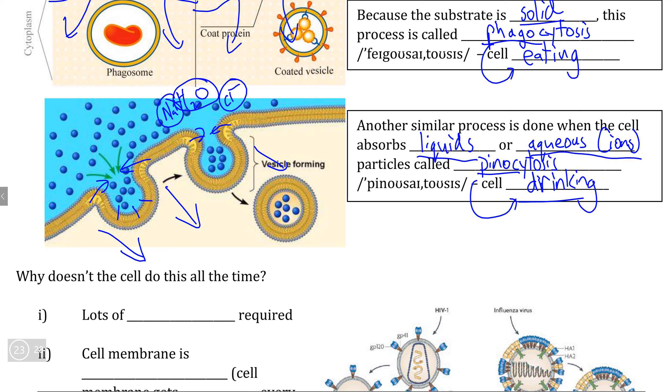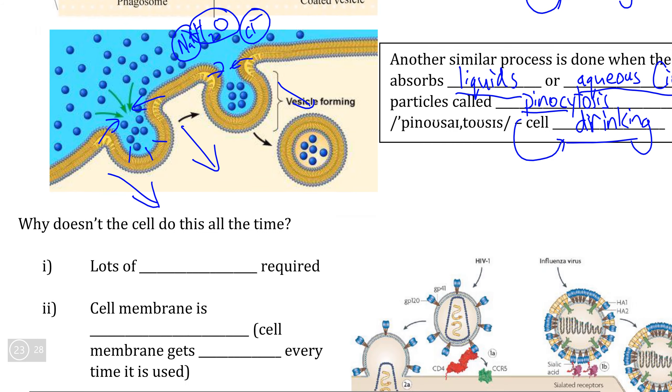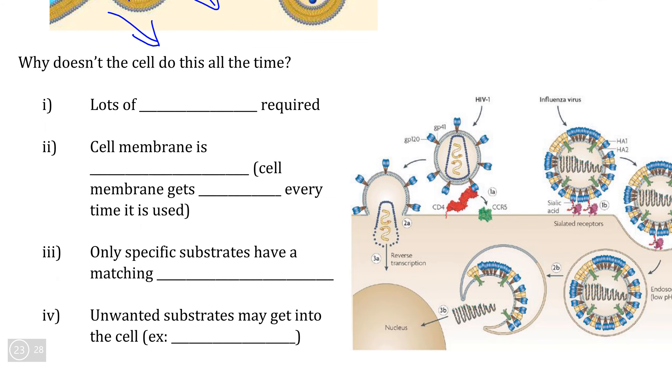Now, this process seems great. We have the ability to internalize very large particles that can't pass through the membrane through traditional diffusion, or in the case of pinocytosis, the ability to take in a great many particles all at the same time. So the logical question is, why doesn't the cell do this all the time?